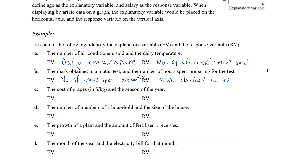Part C: the cost of grapes in dollars per kilogram and the season of the year. The cost of any fruit or vegetable is likely to fluctuate throughout the year depending on whether that fruit or vegetable is in season, so the cost of the grapes is likely to be driven by the season. It's the season that is explaining the cost. So the explanatory variable is the season and the response variable is the cost.